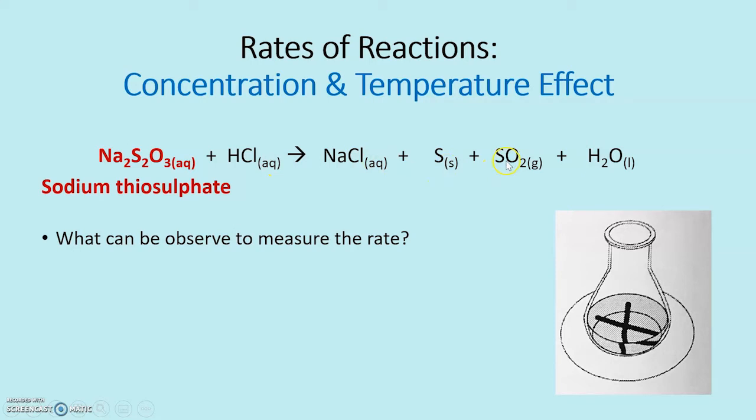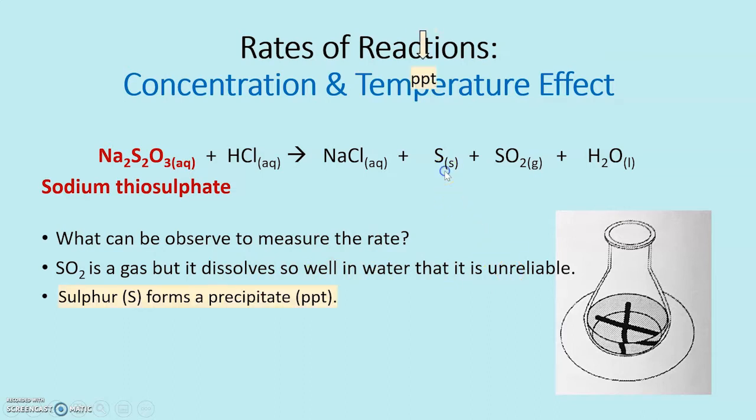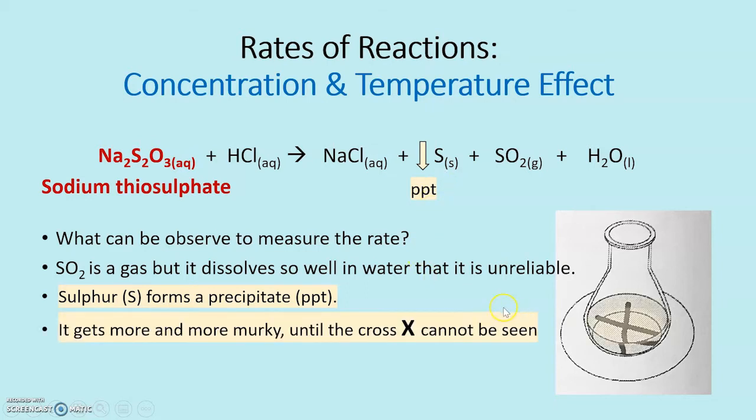Sulfur, sulfur dioxide. Sulfur dioxide is a gas. You might think you could monitor that easily, but in this case it dissolves so well in the water that it's unreliable. So we are going to use sulfur. Sulfur forms a precipitate and as more and more of the precipitate forms so it becomes murkier and the cross eventually can't be seen.